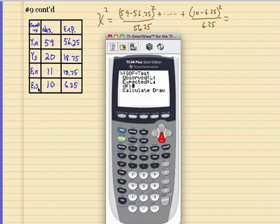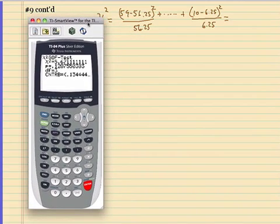One, two, three, four. I have four categories, so my degree of freedom will be one less than that, which is three. And go to calculate. And here we go. So here's my data.